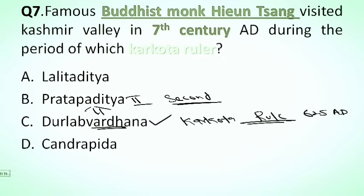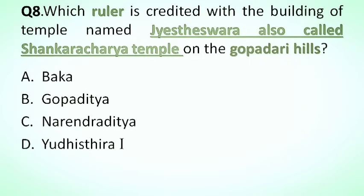Our next question is: which ruler is credited with building the temple named Jyeshteshvara, also called the Shankaracharya temple, on Gopadri hills? Options: A. [not given], B. Gopaditya, C. Narendraditya, D. Yashodhara. The correct answer is option B, Gopaditya. He laid the foundation of the Jyeshteshvara temple, also called the Shankaracharya temple, located in Srinagar.